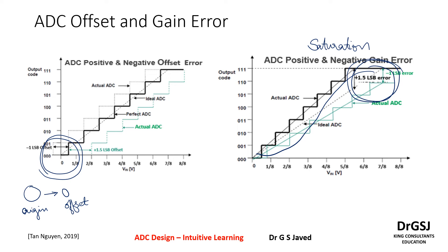The other way of looking at it is: if you draw a straight line, beyond certain input values the output would not change — that is called saturation. So you can remember the saturation error with an S, which gives your gain error. It saturates way before where it actually has to saturate. The positive saturation is seen on the left-hand side and the negative saturation is seen on the right-hand side.